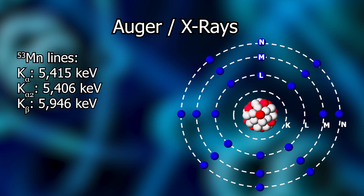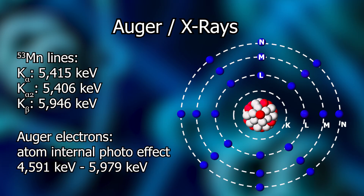However, the energy does not have to leave the atom as an x-ray photon — it could also be transferred to other electrons, which are then shot out. These are so-called Auger or Auger-Meitner electrons. An electron makes a K-alpha transition to fill in the hole created by the electron capture and then transfers the energy to a K-electron, which is shot out of the atom with an energy between 4.591 and 5.979 kiloelectron volts. The energy can also be transferred to one of the other L-electrons, in which case we have L Auger electrons with an energy of around half a kiloelectron volt.